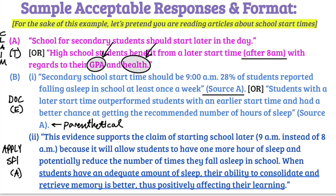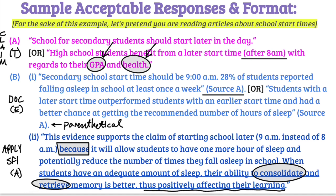Now you need to apply content knowledge — outside specific factual information that supports your claim of starting later in the day. For example: 'this evidence supports the claim of starting school later at 9 a.m. instead of 8 a.m., because it will allow students one more hour of sleep and potentially reduce the number of times they fall asleep in school. When students have an adequate amount of sleep, their ability to consolidate and retrieve memory is better, thus positively affecting their learning.' Here you're drawing from the unit on learning — we need sleep to consolidate memory into storage, and it also assists with retrieving memory.